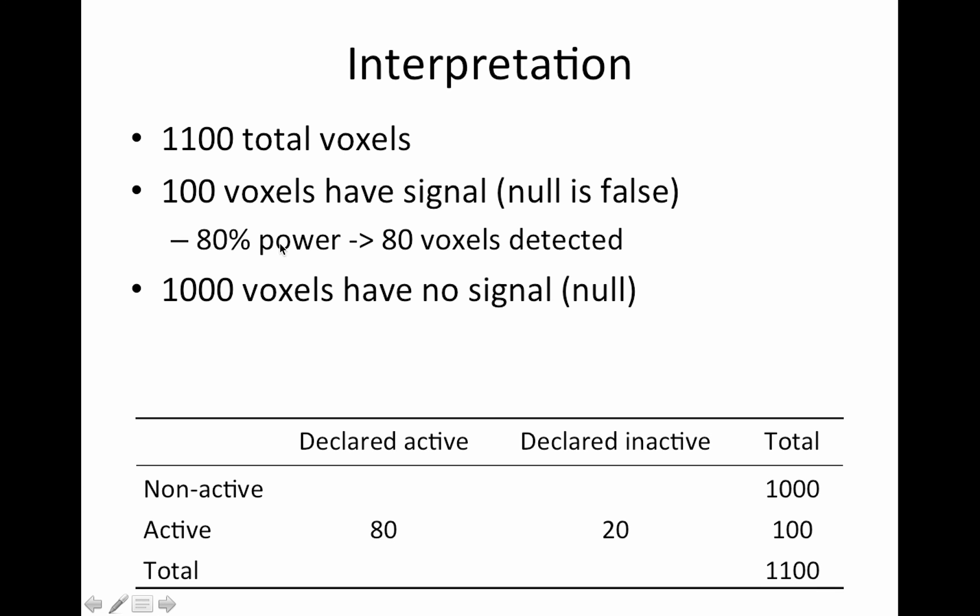If we have 80 percent power, and I'll talk about power much later on, but if you have 80 percent power that means of your active voxels you're going to detect 80 of them, which in this case is 80 because we had 100 voxels with signal, and we missed 20. The 80 is power and the 20 corresponds to type 2 error.